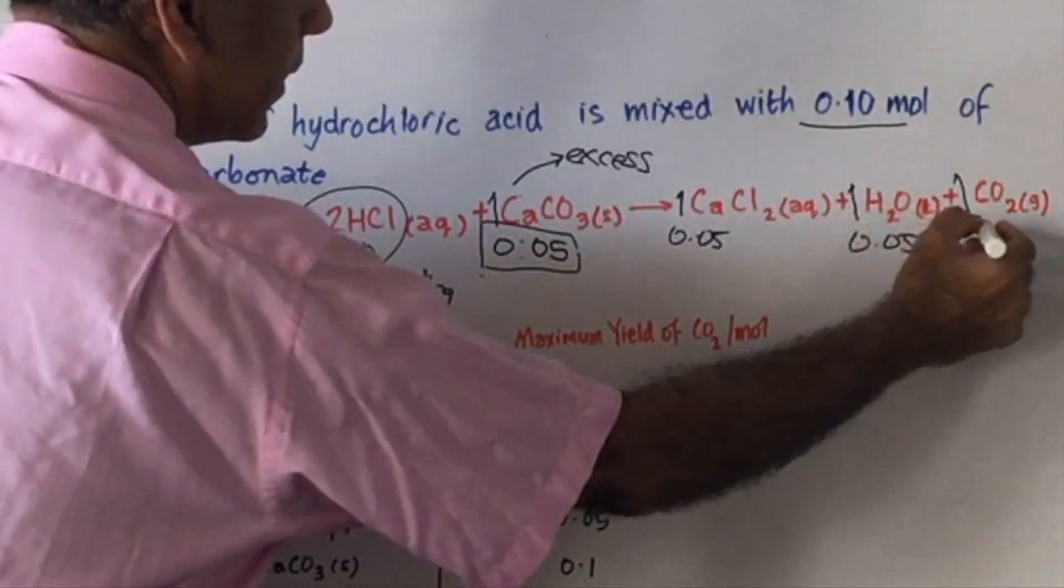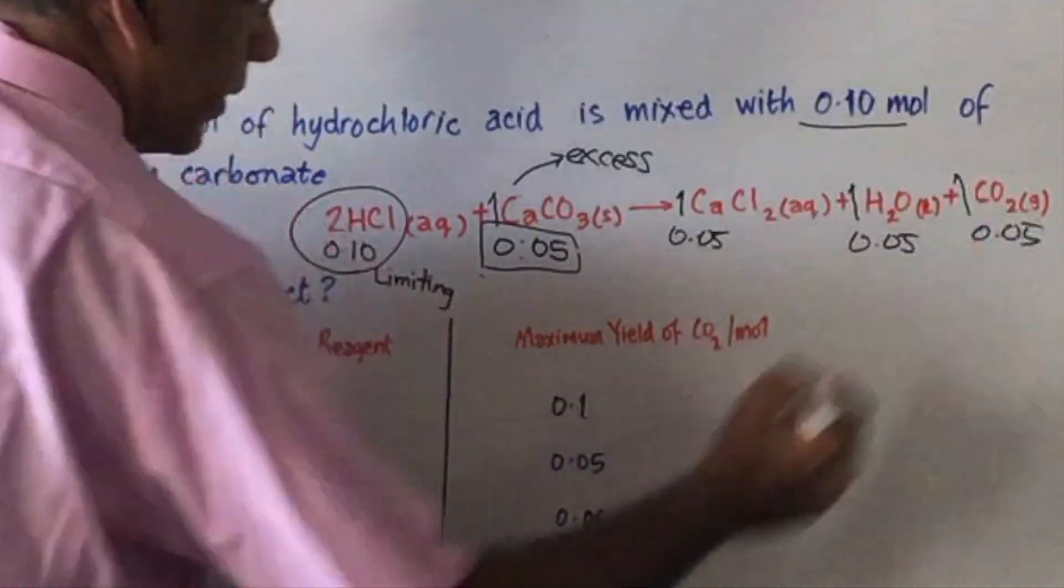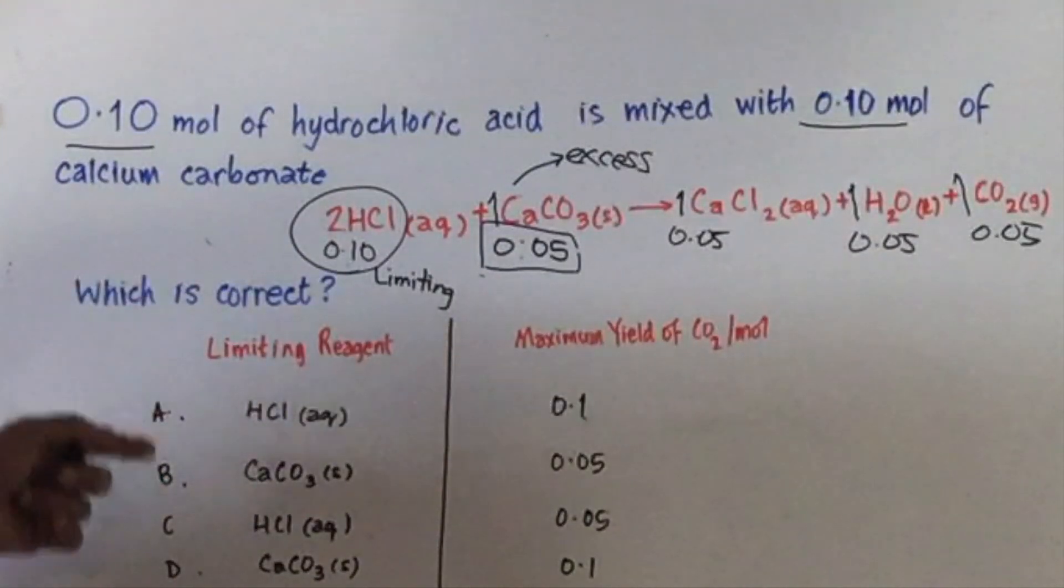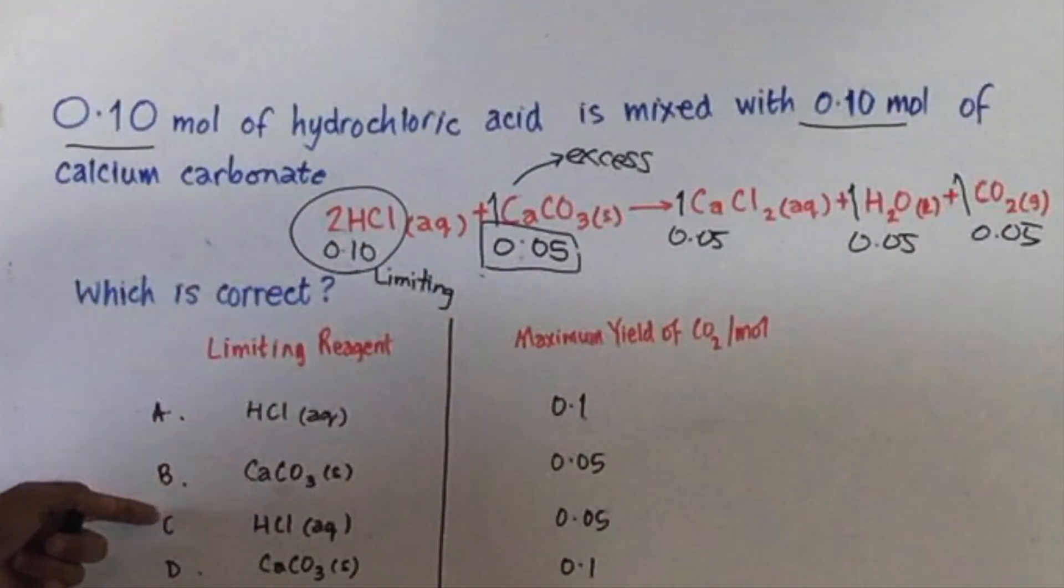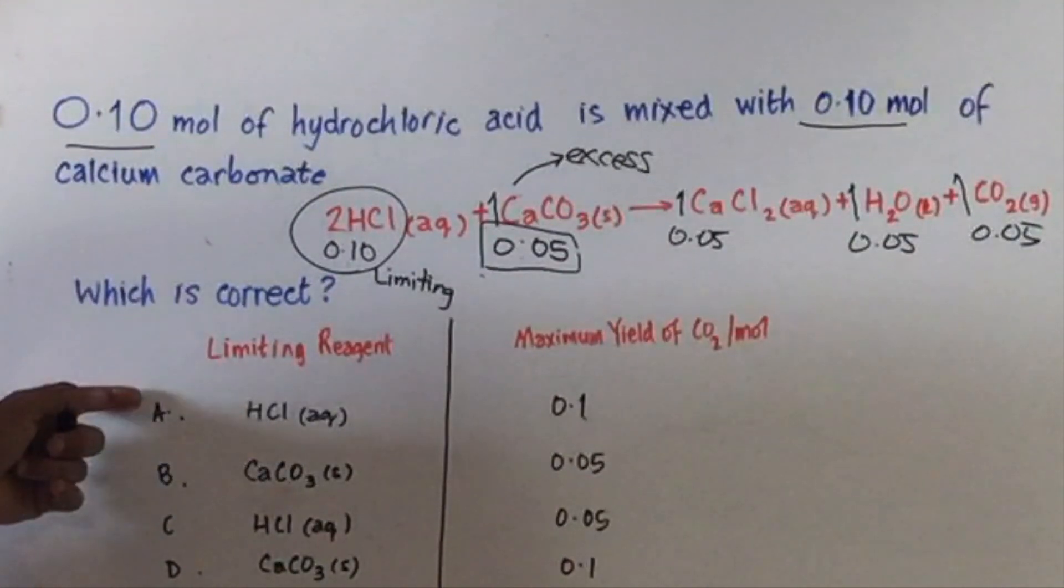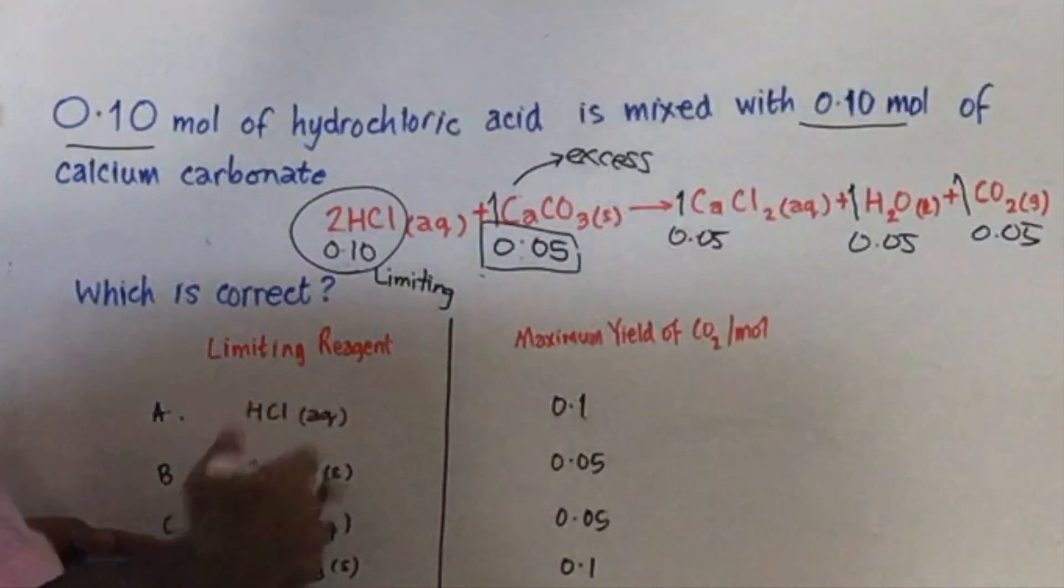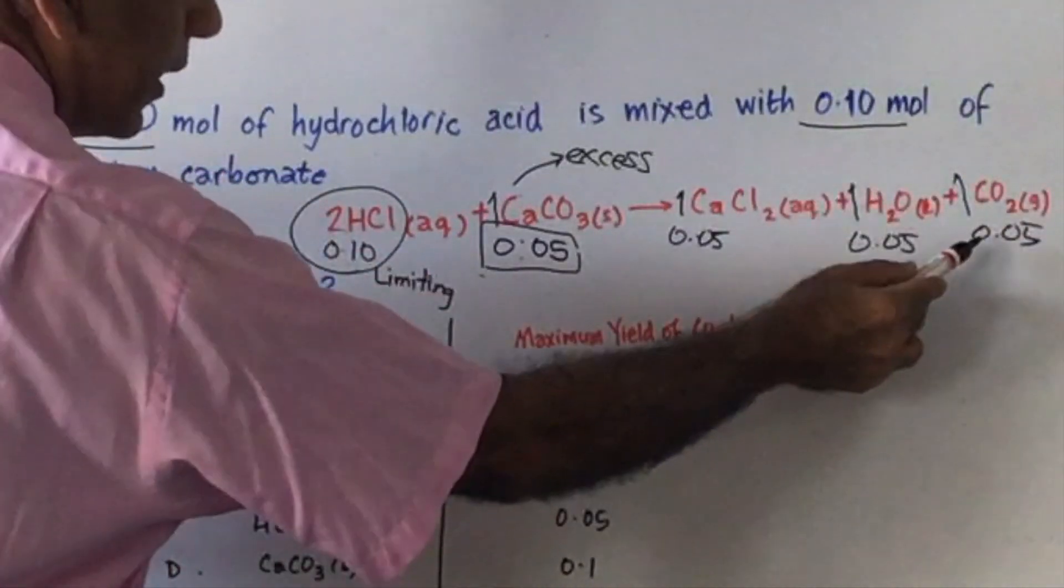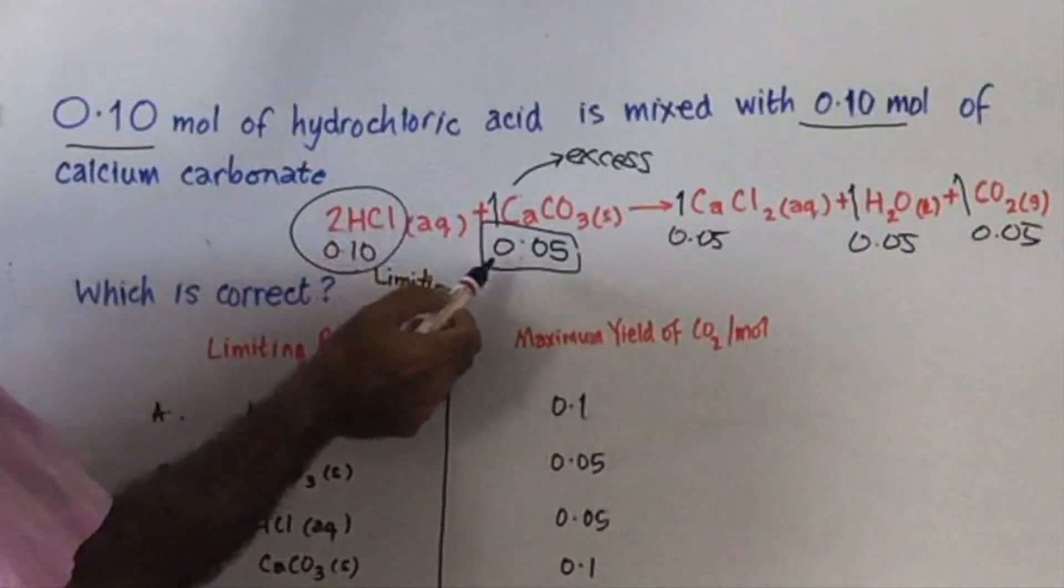Now looking at the answers, we have established that the limiting reagent is hydrochloric acid. So that's C or A. But the other part of it is the maximum yield. For carbon dioxide, you're going to get 0.05 moles in keeping with this here.